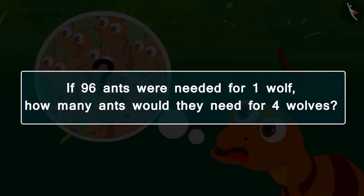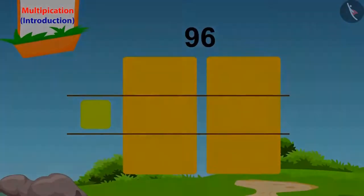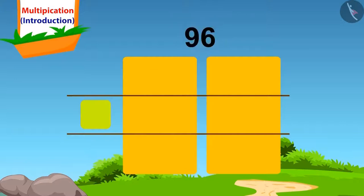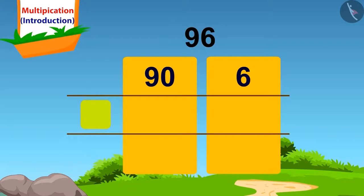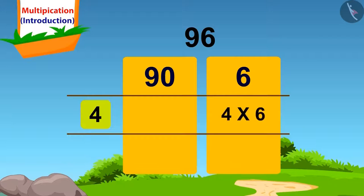Let's do it together. How do we split 96? 90 and 6. We will first multiply 6 of 96 by 4. 4 times 6 is 24. We will write this answer here.